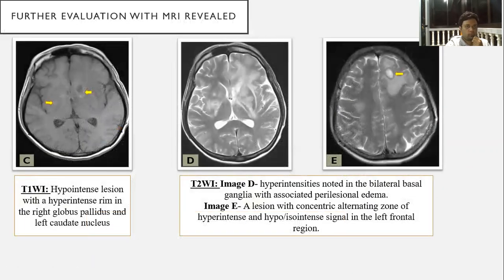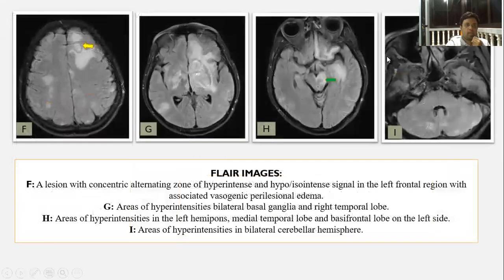Further evaluation was performed with MRI. On T1-weighted images, hypointense lesions with hyperintense ring were noted in the left caudate nucleus and the right globus pallidus. T2-weighted images showed hyperintensity in bilateral basal ganglia with extensive perilesional edema. A region was noted in the left frontal region with concentric areas of hyperintensities and a hypointense ring with surrounding perilesional edema. FLAIR images showed concentric alternating zones of hyperintense and hypointense signal in the left frontal region with associated perilesional edema.